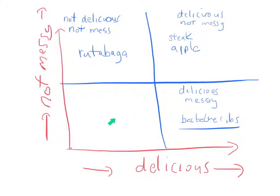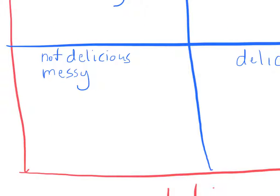What about this last quadrant here? Well, in terms of delicious, it's not so delicious. In terms of not being messy, it's rather messy. So what would fit into this? Not delicious, but messy. Hmm. Well, you certainly couldn't put watermelon in here, which is messy, but most people would agree is rather delicious.